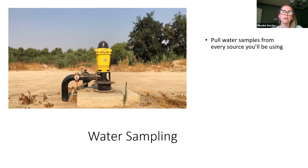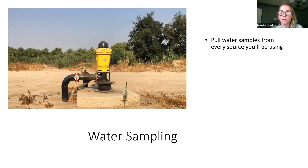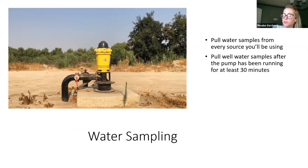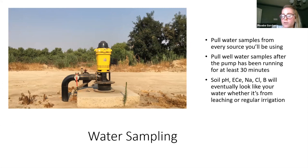Last are water tests—they're a little less complicated than soils. For water sampling, you want to make sure you're pulling water samples from every source you're going to be using—that can be canal water as well as wells. If you have multiple wells, look at them separately. If pulling samples from a well, let the well run for at least 30 minutes before pulling a sample. Your soil is going to eventually look like what your water looks like, especially if you have sodium, chloride, and boron issues, so monitor this on a regular basis.